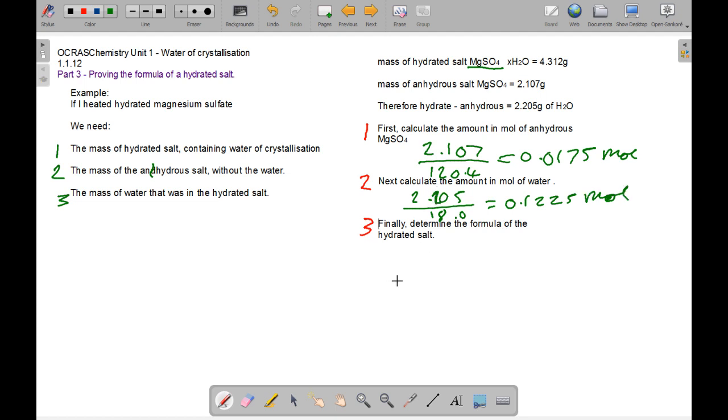And then we get the molar ratio 0.175 to 0.12275. So this is a 1 to 7 ratio. This is MgSO4 to the amount of water. So then we have the final result, MgSO4.7H2O. So x must be equal to 7.